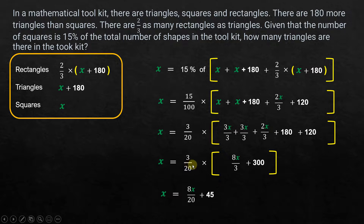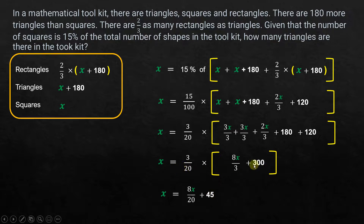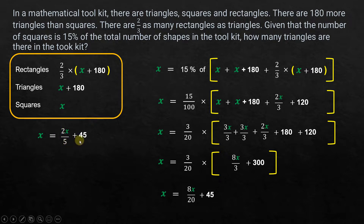Multiplying 3/20 by 8x/3: the 3s cancel, leaving 8x/20. And 3/20 times 300 equals 45. So x equals 8x/20 plus 45. Simplifying 8/20 by dividing by 4 gives 2/5, so x equals 2x/5 plus 45.